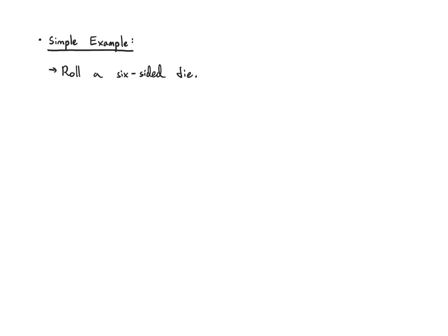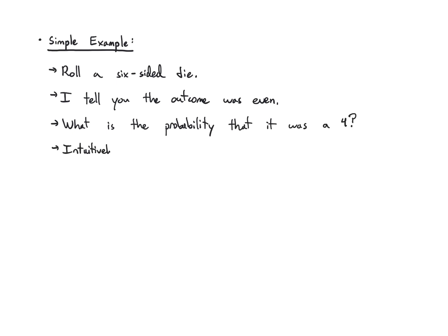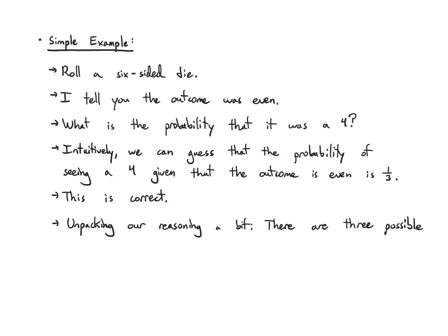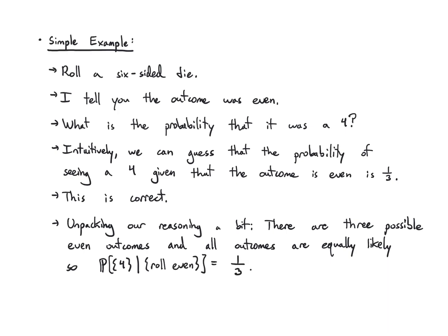To get started, let's work out a really simple example that we can do with intuition. We're going to roll a six-sided die, and I'm going to tell you that the outcome was even. So what is the probability that the outcome was actually a four? Intuitively, we can guess that the probability of seeing a four, given that the outcome is even, is one-third. There are three possible even outcomes, and all outcomes were equally likely, so four is just one of those three outcomes.